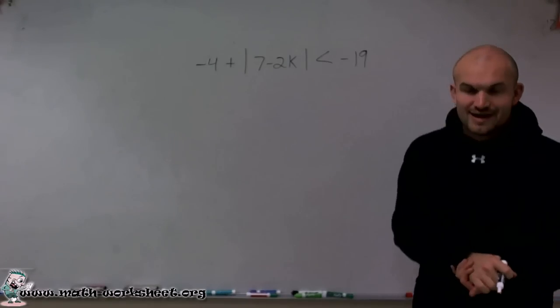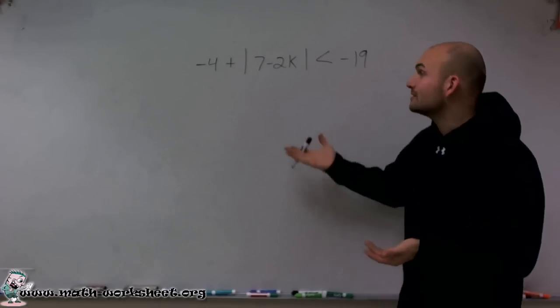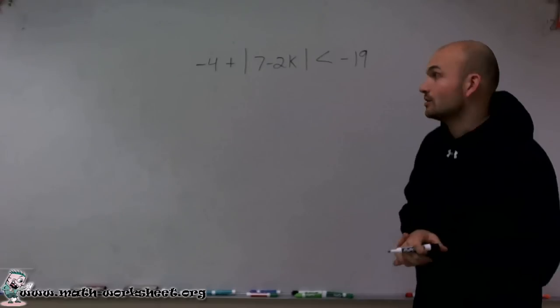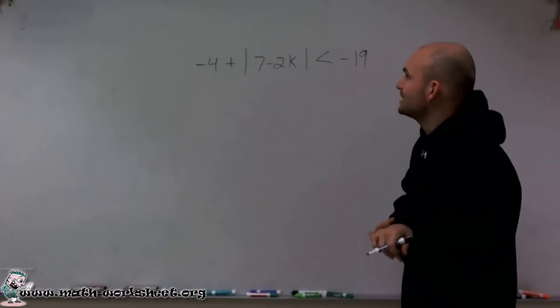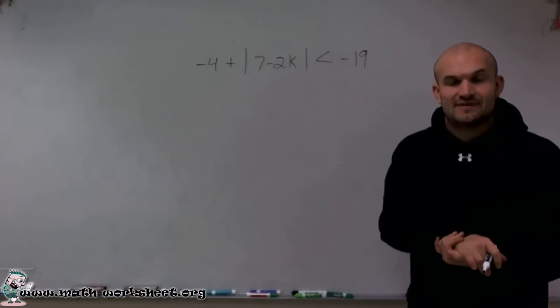Welcome. So what I want to do is show you how to solve and graph this linear inequality, or absolute value inequality. So what I have is negative 4 plus absolute value of 7 minus 2k is less than negative 19.